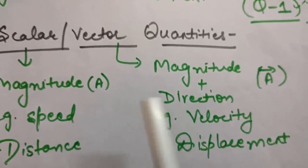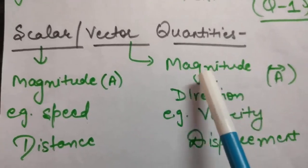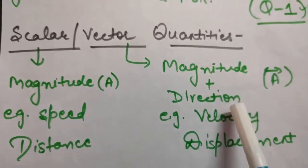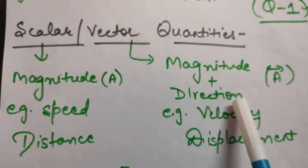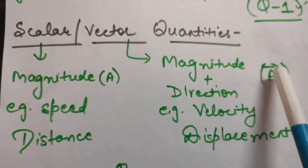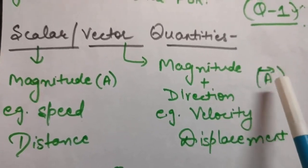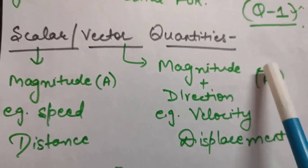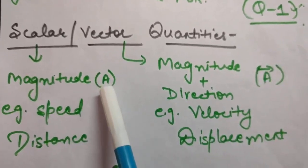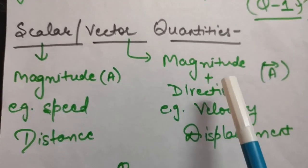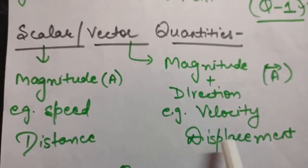Vector quantities are those which have magnitude as well as direction. To represent them, we use a variable and put an arrow on that variable. This is a vector quantity representation. An example of a vector quantity is velocity.